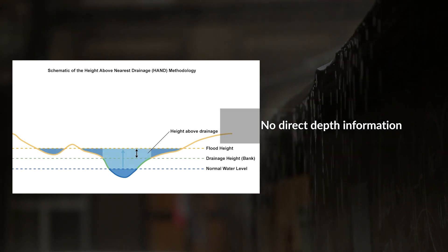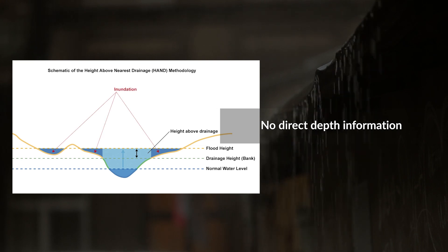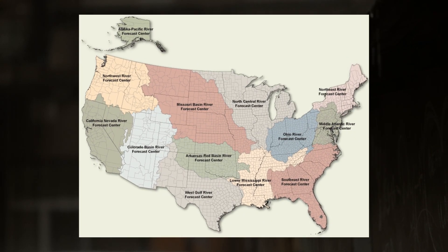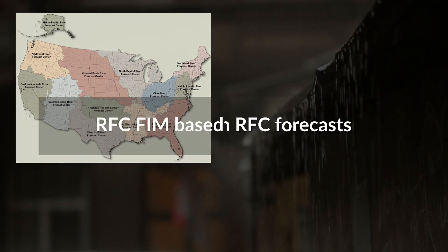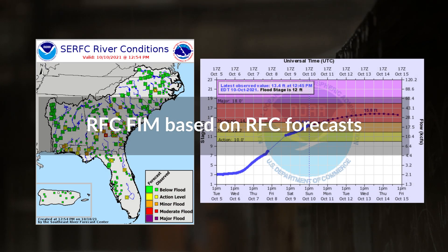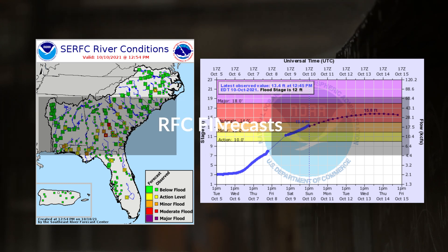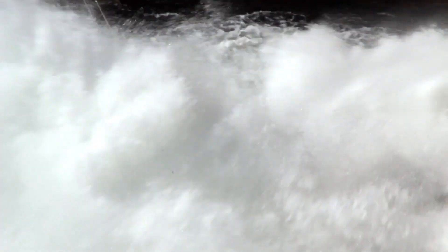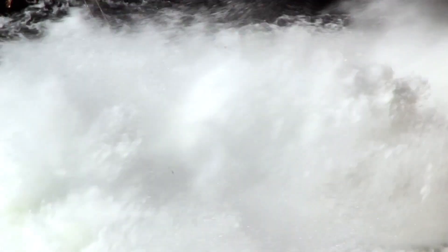There is no direct depth information. The main advantage of the RFC FEM over the NWM FEM is that the RFC FEM is based on the official RFC flow forecasts. This consistency can be very useful in a flood situation, especially when complex processes are in play.